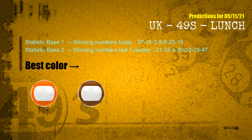According to the statistics above, with winning numbers today — 37, 16, 02, 09, 06, 25, 15 — and winning numbers last Tuesday — 21, 33, 04, 38, 32, 29, 47 — the most frequent following colors are orange and brown.